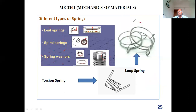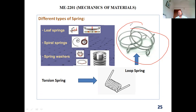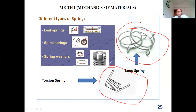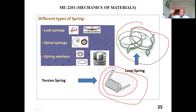Then the loop spring. You will see in automobiles, a lot of hoses are connected using loop springs to attach the pipe or hoses tightly. Also in engine systems and chemical industries, they use this kind of loop spring to connect hoses or pipes together. There is also the torsion spring — the clip used to attach papers has a torsion spring inside, and the cloth-drying clip also has a torsion spring.